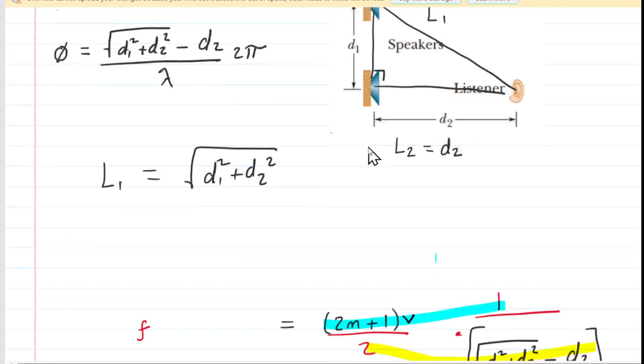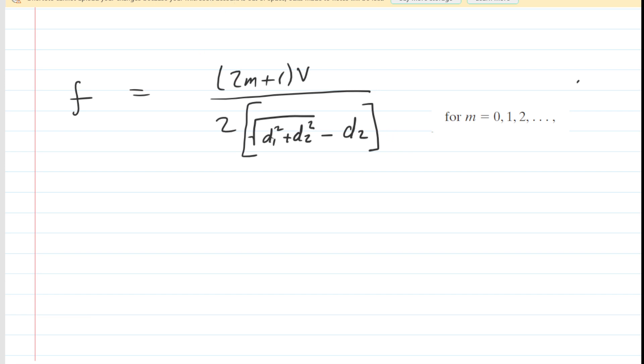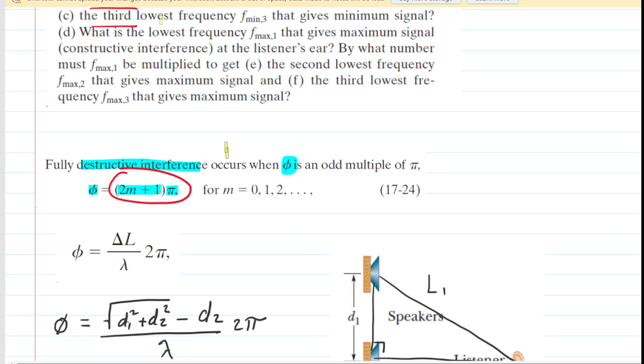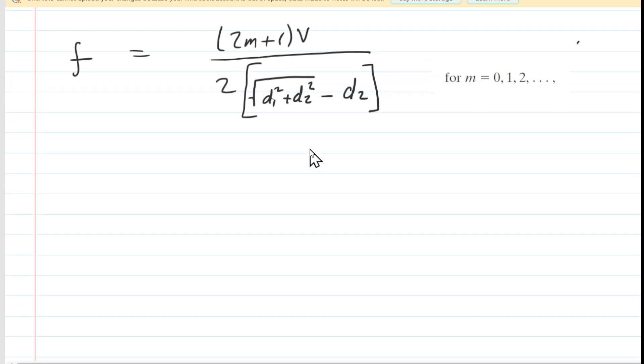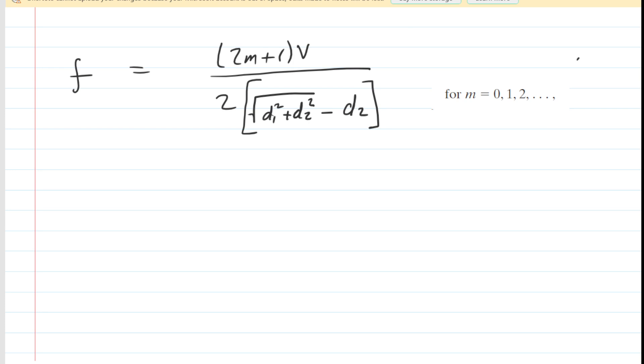So if we want to start with part a and get the lowest possible frequency, we can see that frequency is proportional to this 2m plus 1 term right here. So to make the frequency as low as possible, we would want to make m as low as possible. And therefore, we're going to first allow m to equal 0. So let's go ahead and plug 0 in for m for part a.